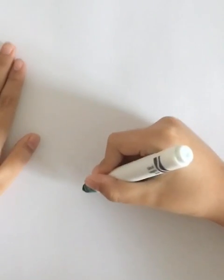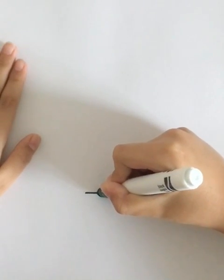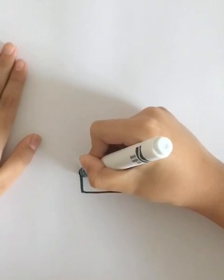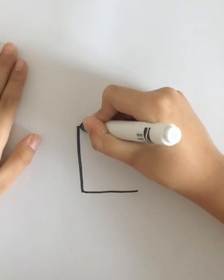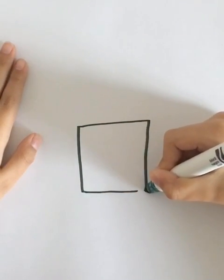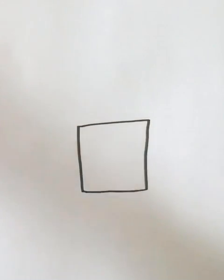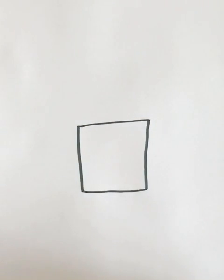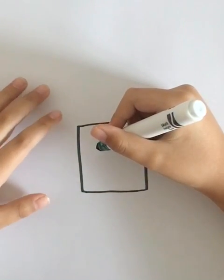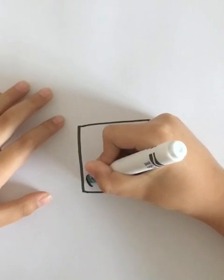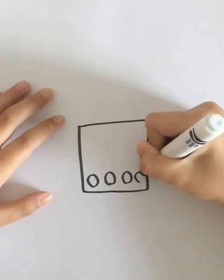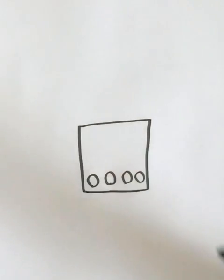First, I'm going to draw a square shape. It doesn't have to be a perfect square, just draw a square.